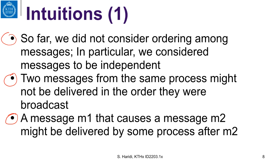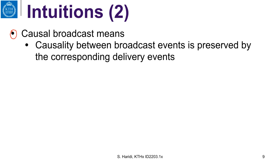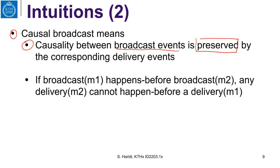A message M1 that causes a message M2 might be delivered by some process after M2. Causal broadcast means that the causality between broadcast events is preserved by the corresponding delivery events. If the broadcast of M1 happens before the broadcast of M2, then any delivery of M2 cannot happen before a delivery of M1 on any process. All processes must respect the happens-before order of the broadcast events.